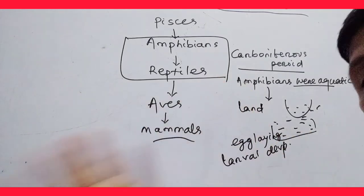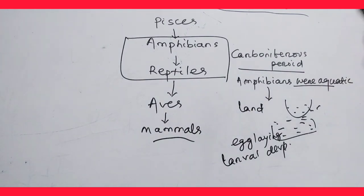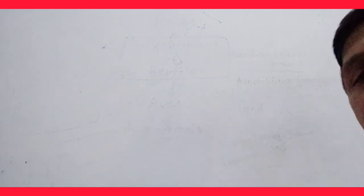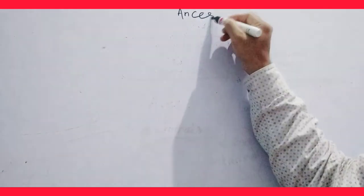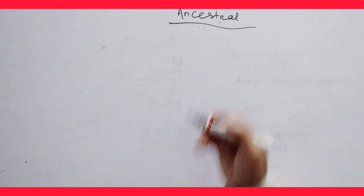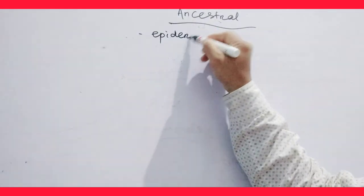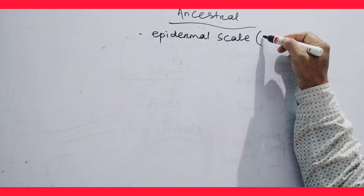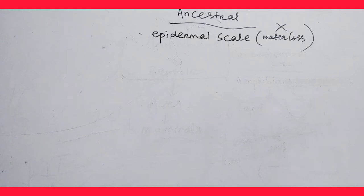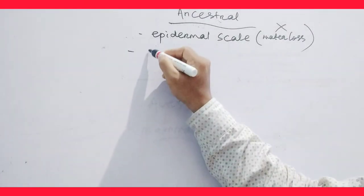The ancestral amphibians became reptiles. What were the characteristics due to which they were converted into reptiles? Some of the evolutionary features of amphibians which diverted them into reptiles: the body became covered by epidermal scales. These epidermal scales functioned to prevent water loss. With respect to water loss, the reptilia during origin evolved scales.